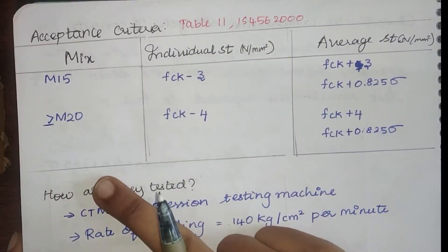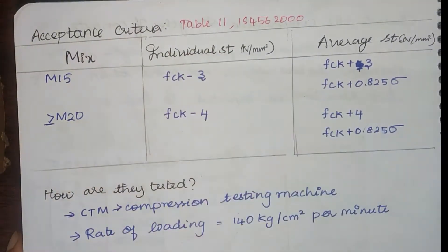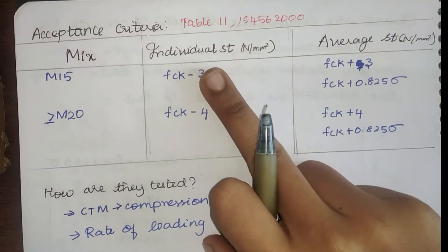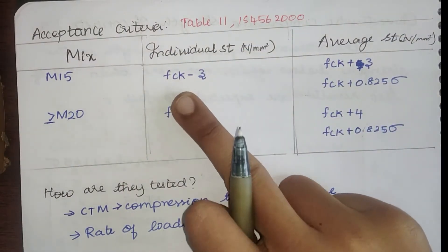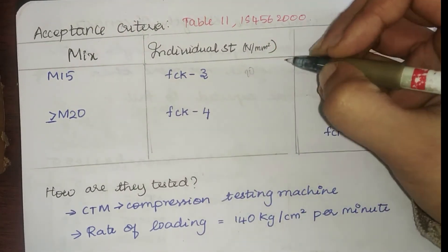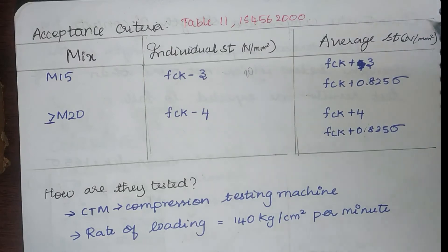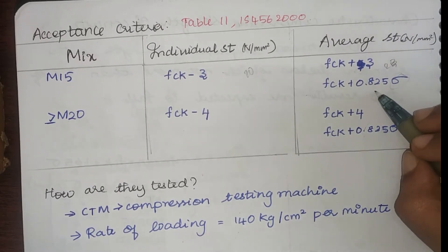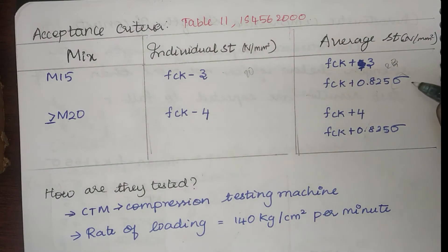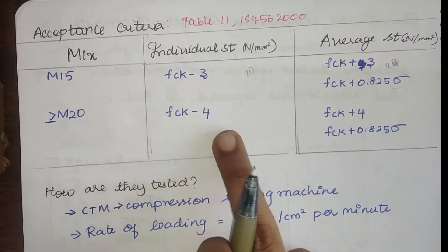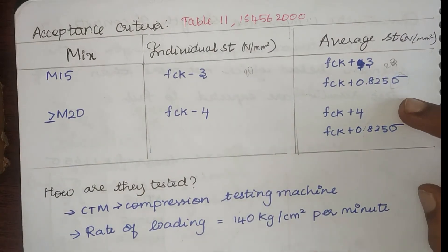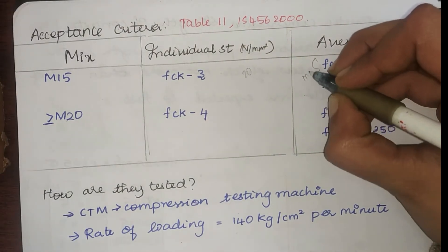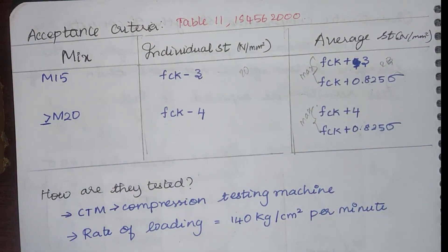Looking into the other acceptance criteria, we have two acceptance criteria: for M15 and for other concretes greater than or equal to M20. This is given in Table 11 IS 456 2000 for the individual strength and average strength of the cubes. For individual strength, it should be at least fck minus 3. Say if my fck is 20, then it should be at least 17, whereas average strength should be fck plus 3, which means it should be at least 23. According to standard deviation also I have a formula: fck plus 0.825 standard deviation. Next for M20, it should be at least fck minus 4, and for average strength it is fck plus 4 or fck plus 0.85 times standard deviation. The maximum of both these values are taken.